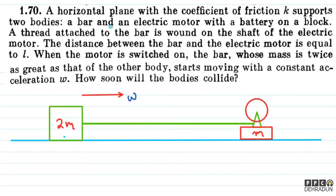So let's have a look at this question. Basically, we have a horizontal plane with coefficient of friction, two bodies — a bar and an electric motor with a battery attached on a block. A thread attached to the bar is wound on the shaft of the motor. So here is the motor on one side, and on the other side the bar is wound on the shaft.